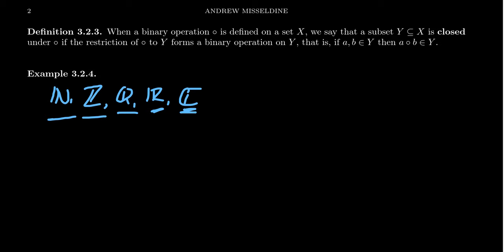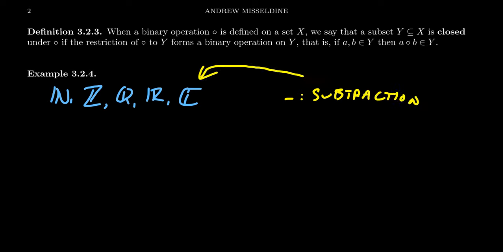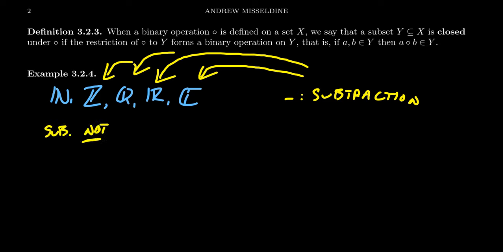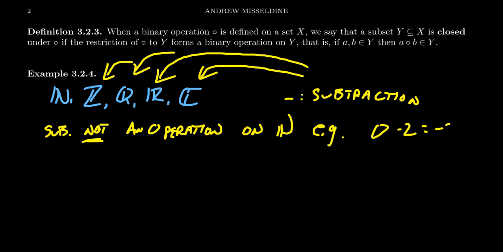Now, in the previous video when we talked about binary operations, I did not mention subtraction or division, and there are some reasons for that. When it comes to subtraction in its usual sense, subtraction is an operation on C and on R. The subtraction operation on the real numbers is just a restriction of complex subtraction — a real minus a real is in fact a real again. The same is true for rationals and for integers. However, subtraction is not an operation on the natural numbers, because if you subtract two natural numbers you might not get a natural number back. For example, zero minus two gives us negative two, which is not a natural number.